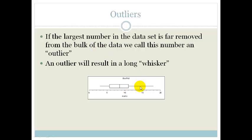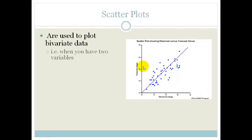If the largest number in the data set is very far from the bulk, then we end up with a very long whisker and we call this the outlier. And 90% of the time, the outlier is ignored in data, but still, this is how it works.